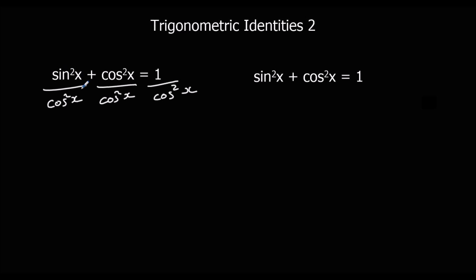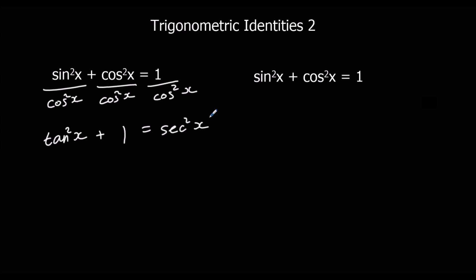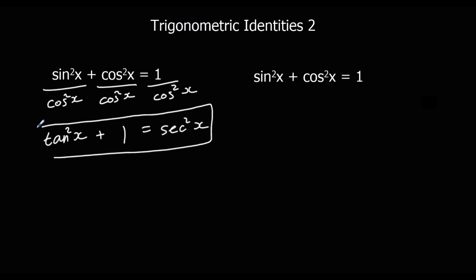We've got sin²x over cos²x — and sin over cos is tan — so we've got tan²x. Cos²x over cos²x, anything divided by itself, is 1. And 1 over cos²x — that's sec²x. So here's one of our new identities: tan²x + 1 = sec²x.